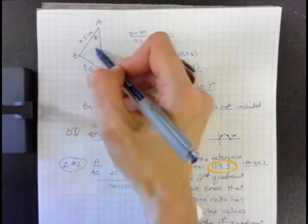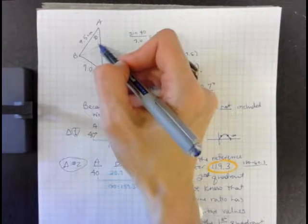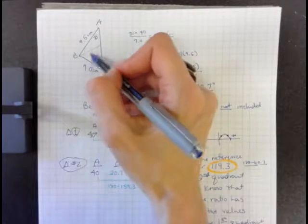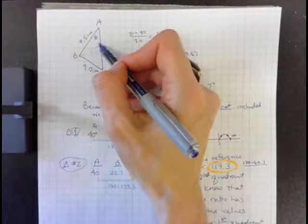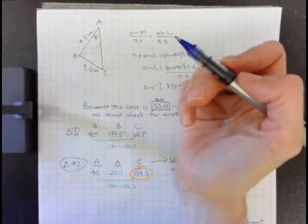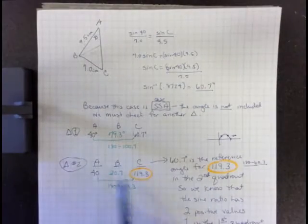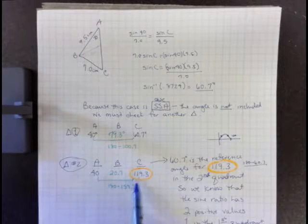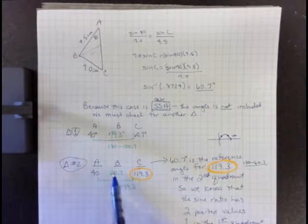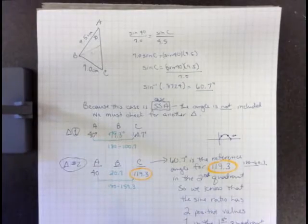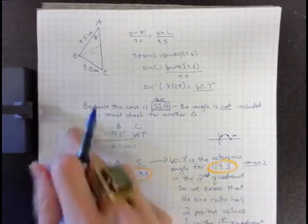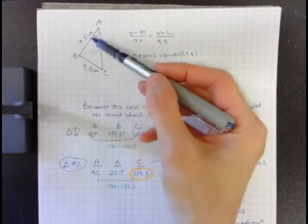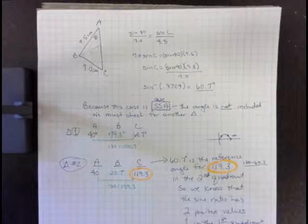And that is this triangle where it's an obtuse triangle. Even though these two are the same size, if this is an obtuse angle now, B is going to be a much smaller angle. And again, if I have two angles of a triangle, I just subtract the total from 180 and I get 20.7 degrees. So these are the two triangles that work when we have the side-side-angle case.